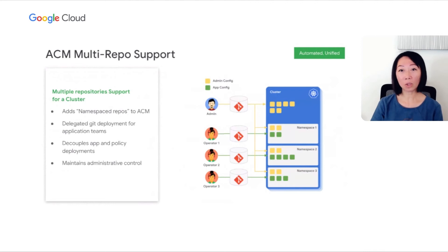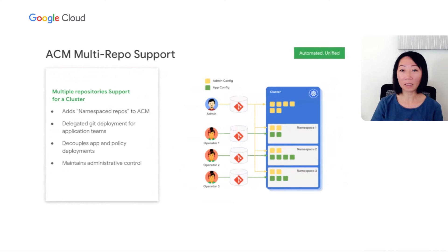Another exciting new feature introduced this year is ACM multi-repo support. Enabling multi-repo mode lets you sync configurations from multiple repositories to the same set of clusters. The platform admin manages centralized infrastructure for the organization and enforces policies on the cluster and all namespaces. The application developers, who are responsible for managing live deployments, apply configurations to applications in the namespaces they work on. The multi-repo feature decouples the config deployment lifecycle for different teams, providing more autonomy and flexibility, and you get to choose where you want to place the repo and how to structure it.